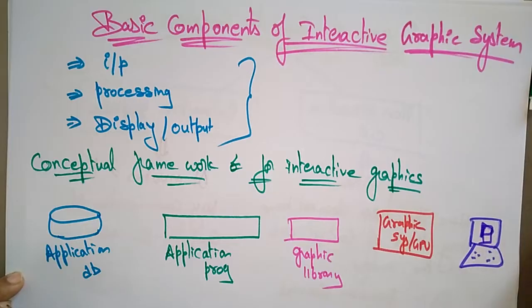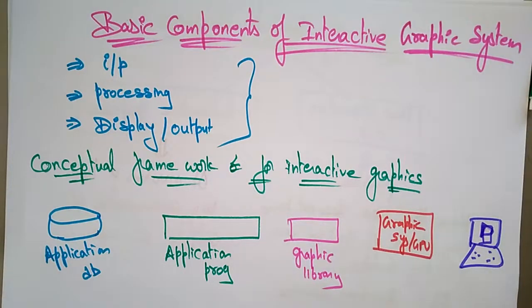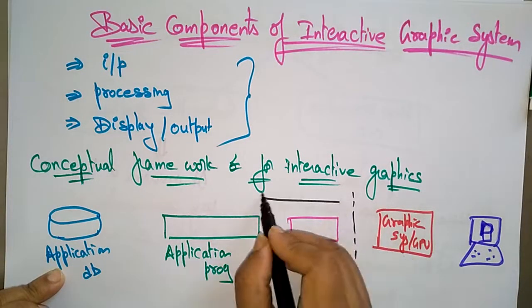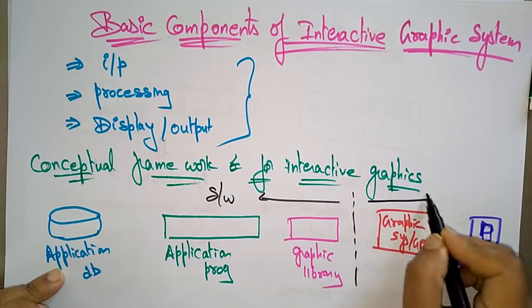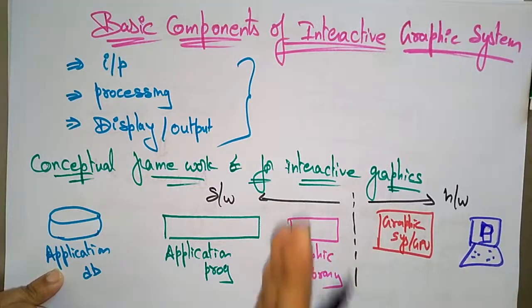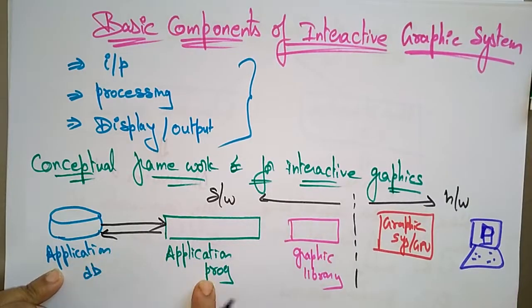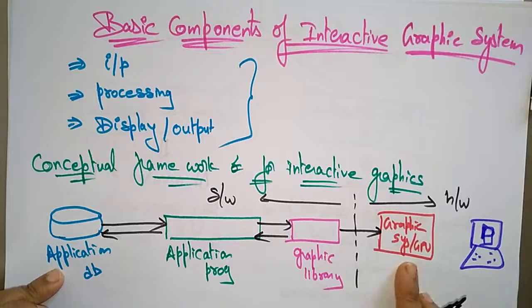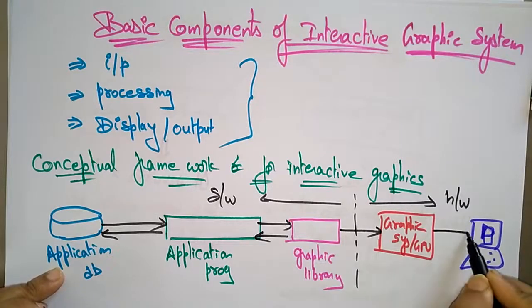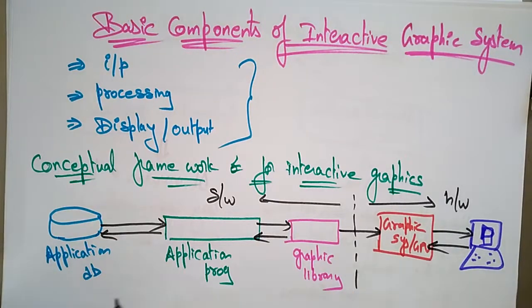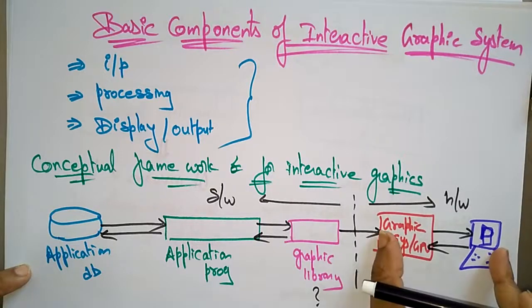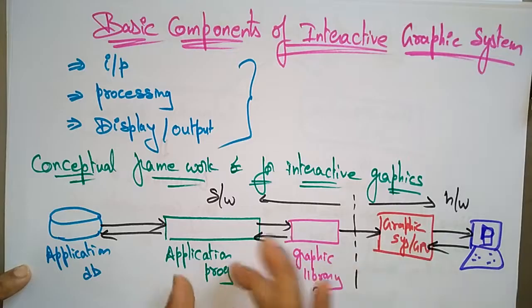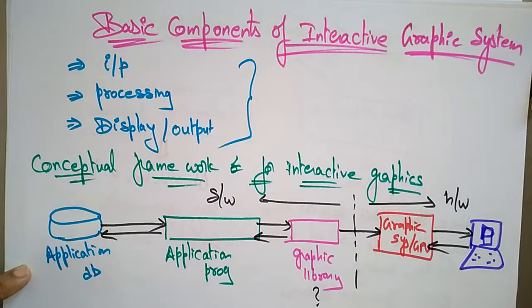Up to the graphic library, this completely comes under software. After the graphic library, this is the hardware part. So on the software side we have the application database and the application programs. The graphic library is connected to the hardware system — that is the graphic system or the GPU — and this communicates to the computer system. The graphic library sits between the application program and the display hardware.